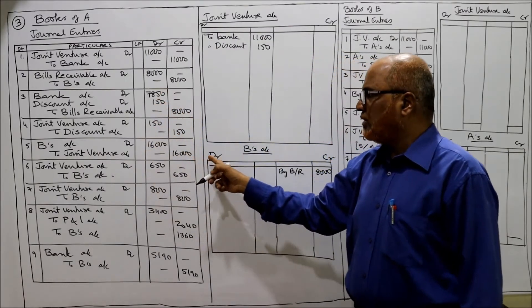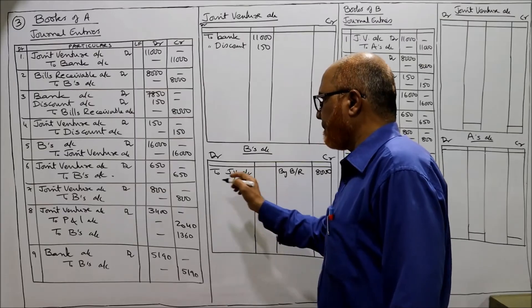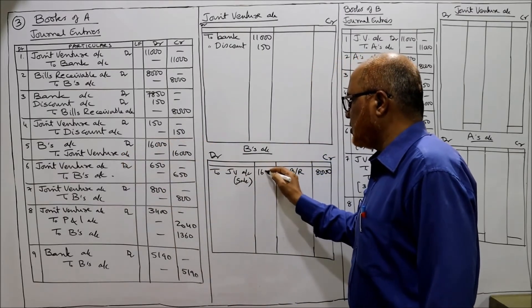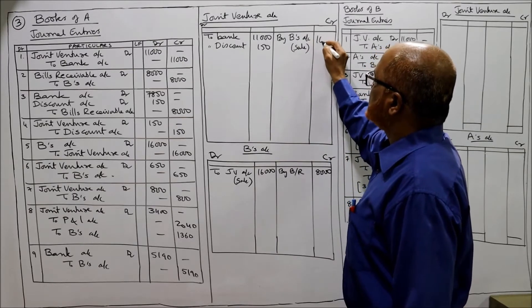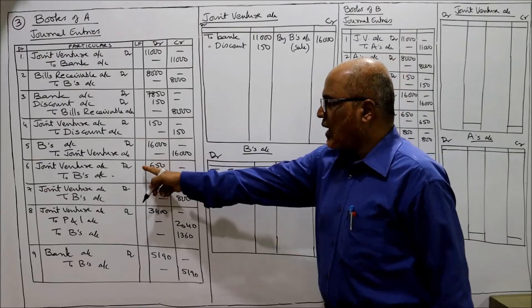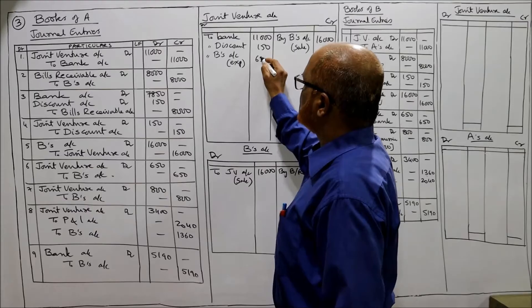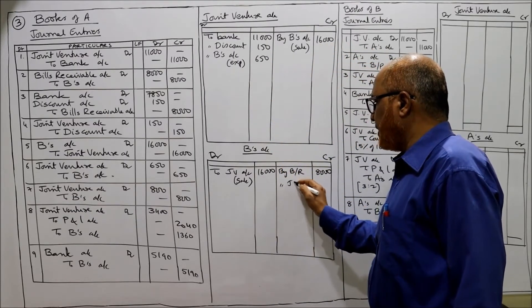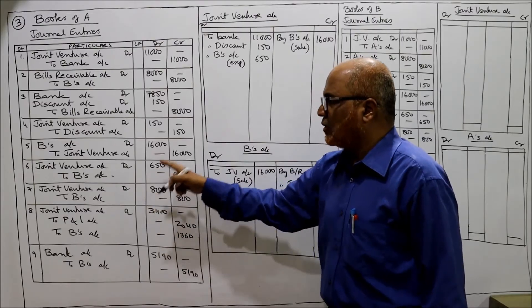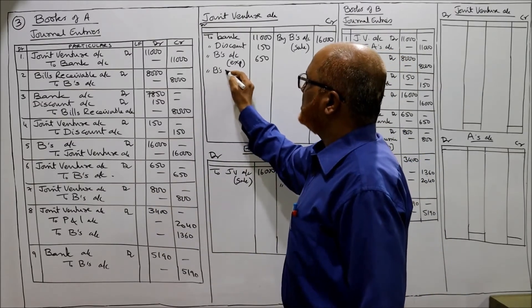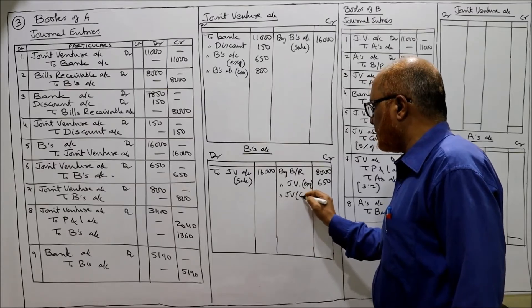B's Account Dr. to Joint Venture - B's account is debited to joint venture account - 16,000. Next, Joint Venture Account Dr. to B's Account - joint venture is debited to B's account for expenses - 650. B's account is credited by joint venture expenses 650. Then Joint Venture Account Dr. to B's Account for commission - 800. B's account is credited by joint venture commission - 800.